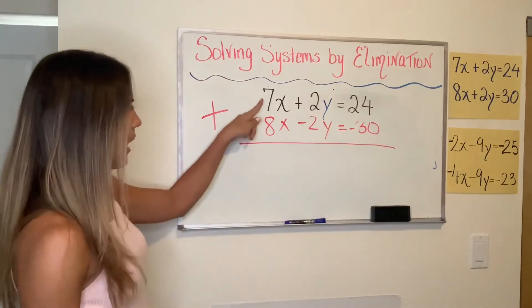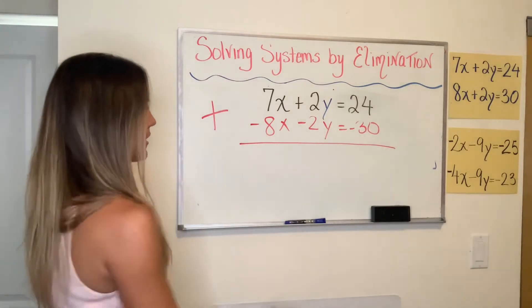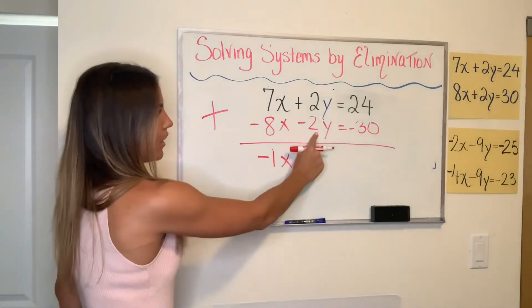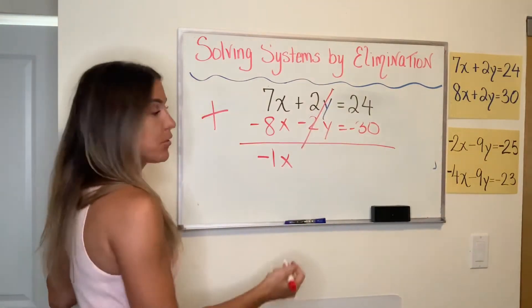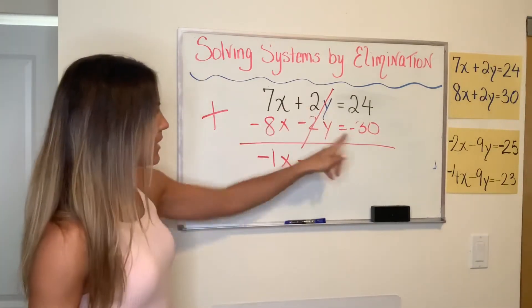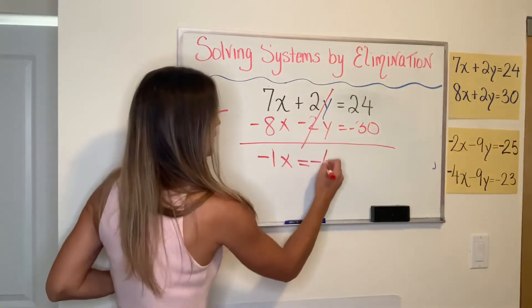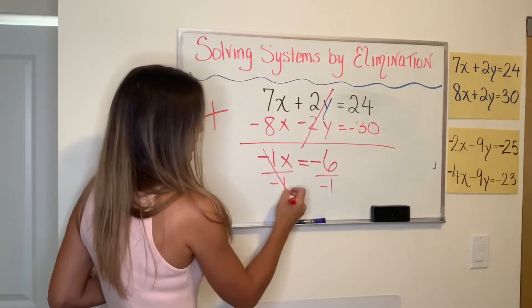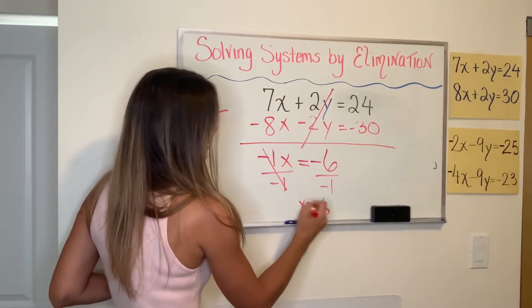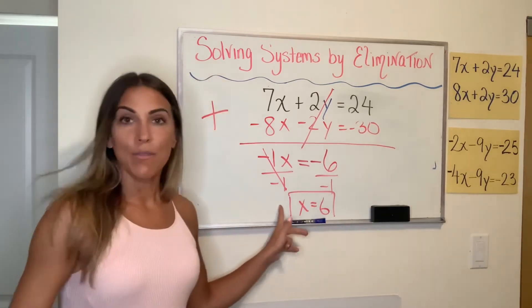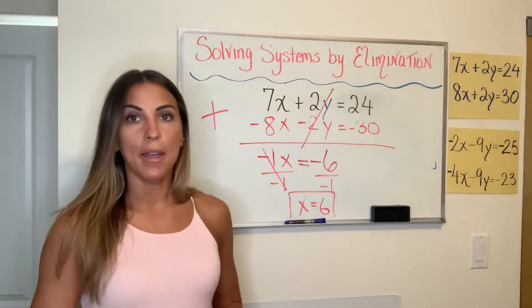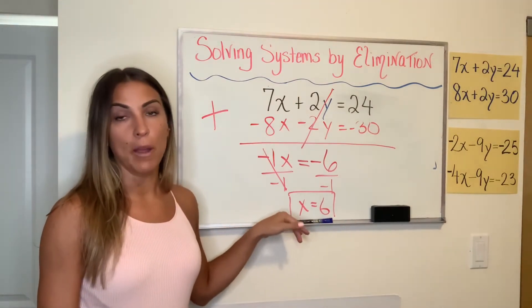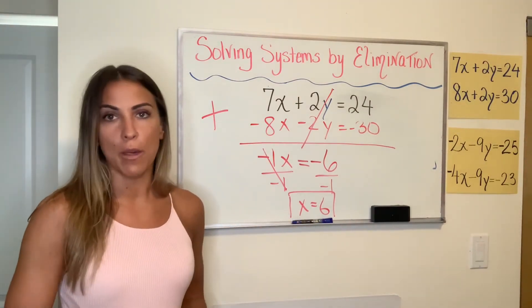We have 7X plus negative 8X. That's negative 1X. 2Y plus negative 2Y cancels out. That's zero equals 24 plus negative 30. That's negative six. Now I'm dividing by negative one on both sides. These cancel out and I get X equals six. That's the X value. I'm not going to continue to find the Y because that process is the same, but you see that we got the same X value by doing it this way. So whichever method works better for you, you can do.